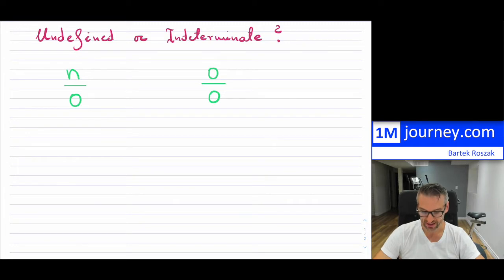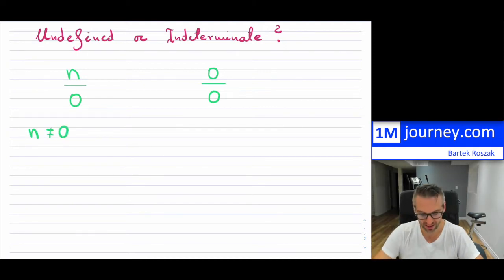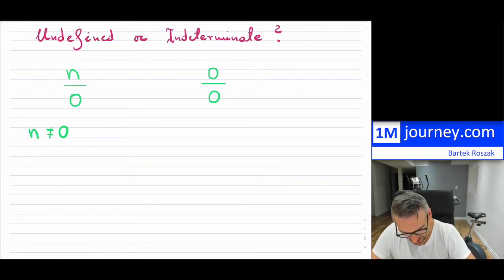The one on the left-hand side, when you have a non-zero number—we'll assume that this n is non-zero, because if it was 0, we'd be back to the other case. So if n is not equal to 0,